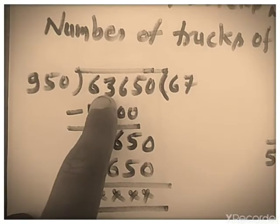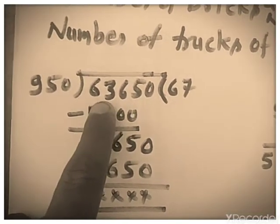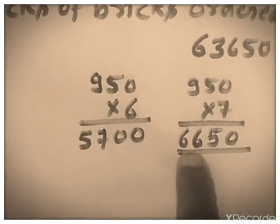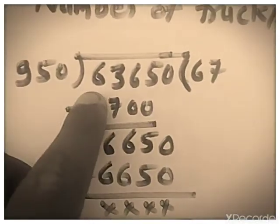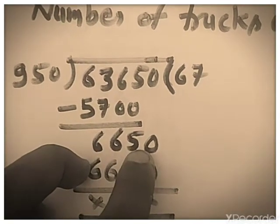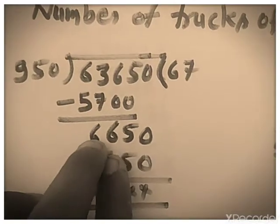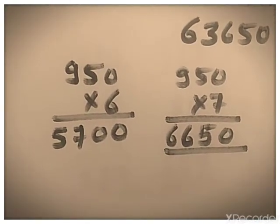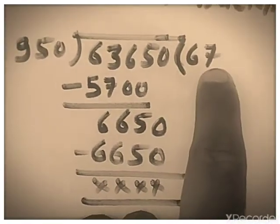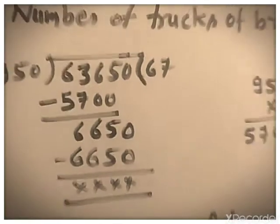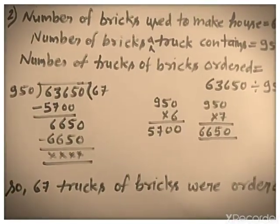63 is greater than 54; 9 × 7 is 63 — 63 equals 63. But when we divide 950 by 7 we get 6,650, so I take 950 × 6 = 5,700. Subtract 5,700 from 6,365 — we get 665; take the zero, it becomes 6,650. That is 7 × 950 = 6,650, so it is completely divisible. The answer is 67 trucks of bricks were ordered.